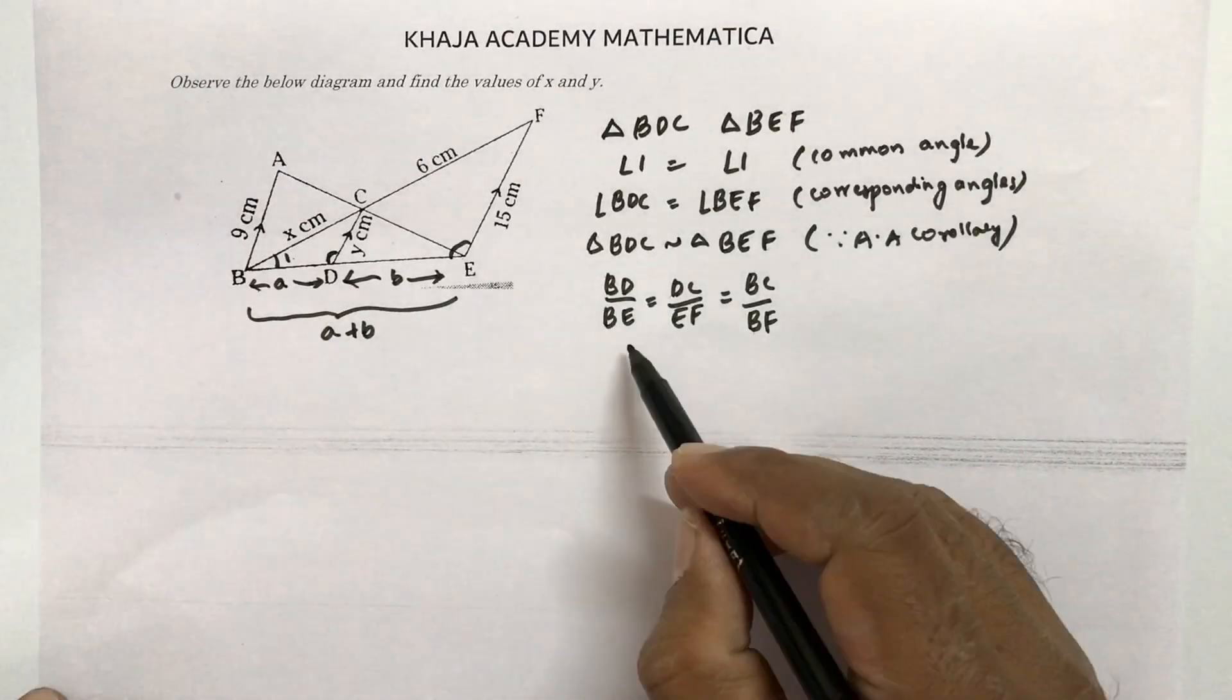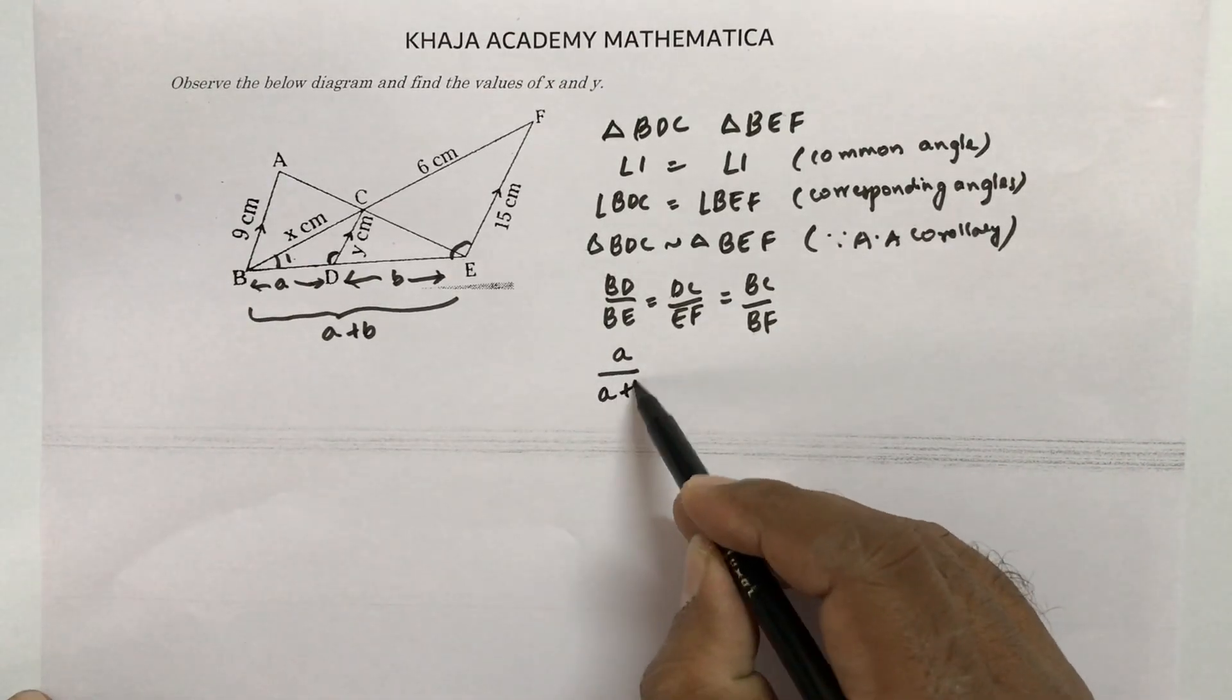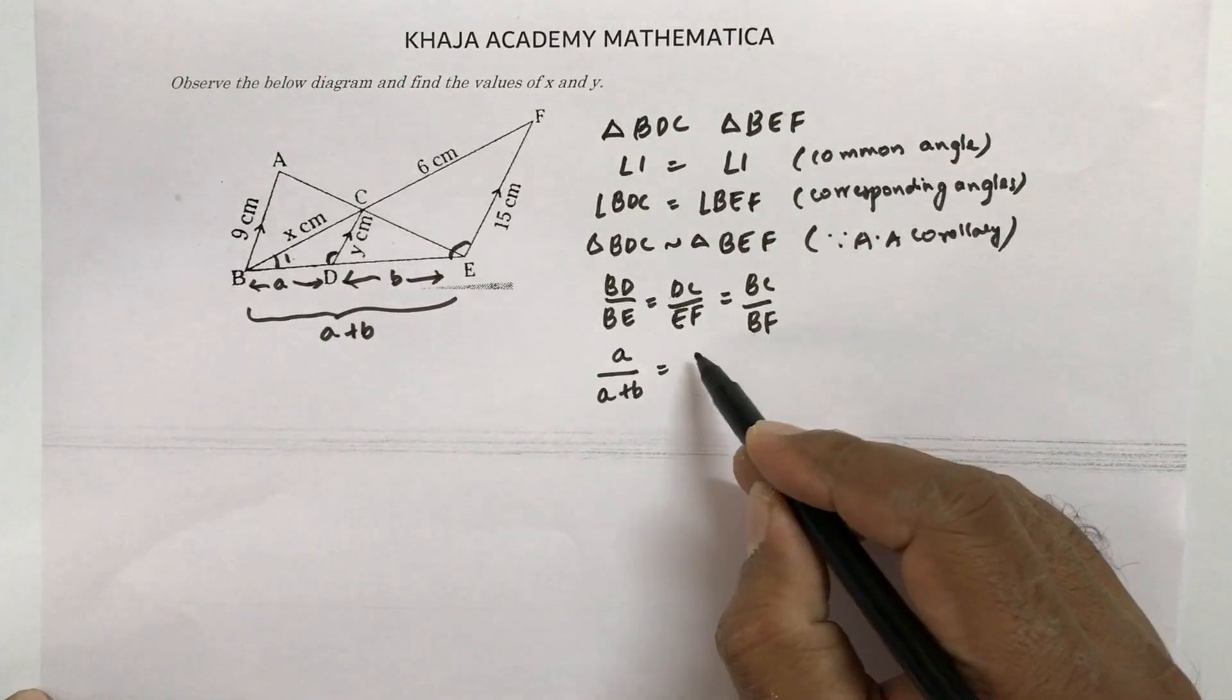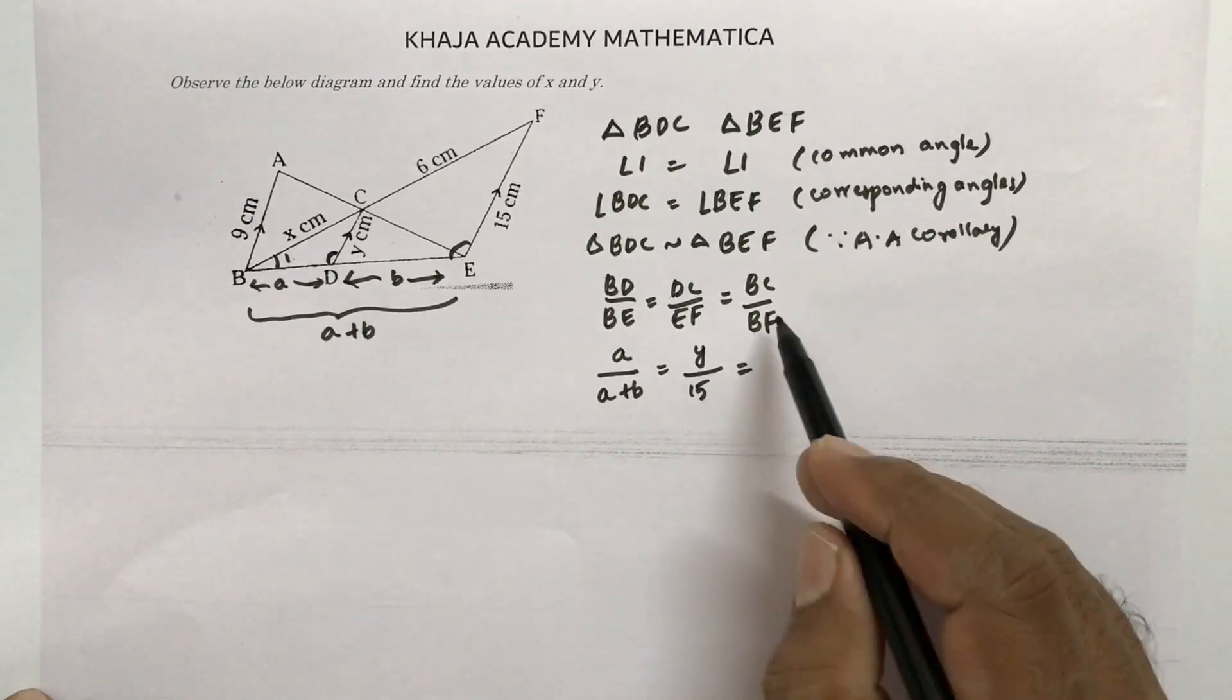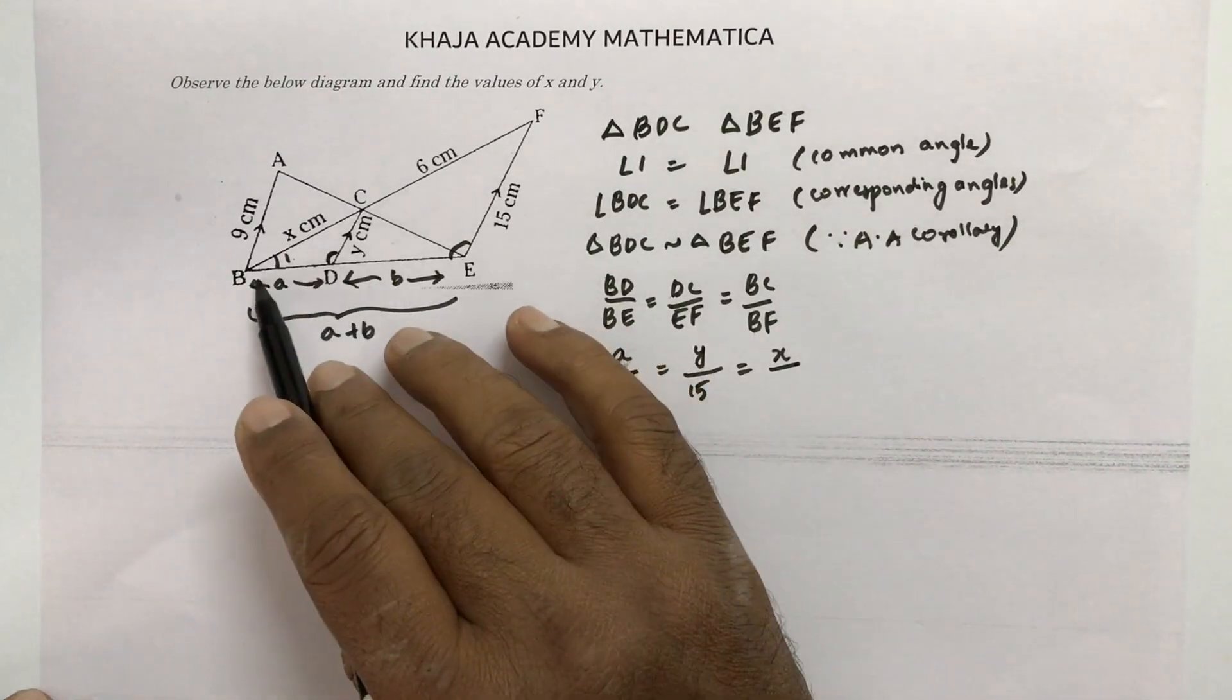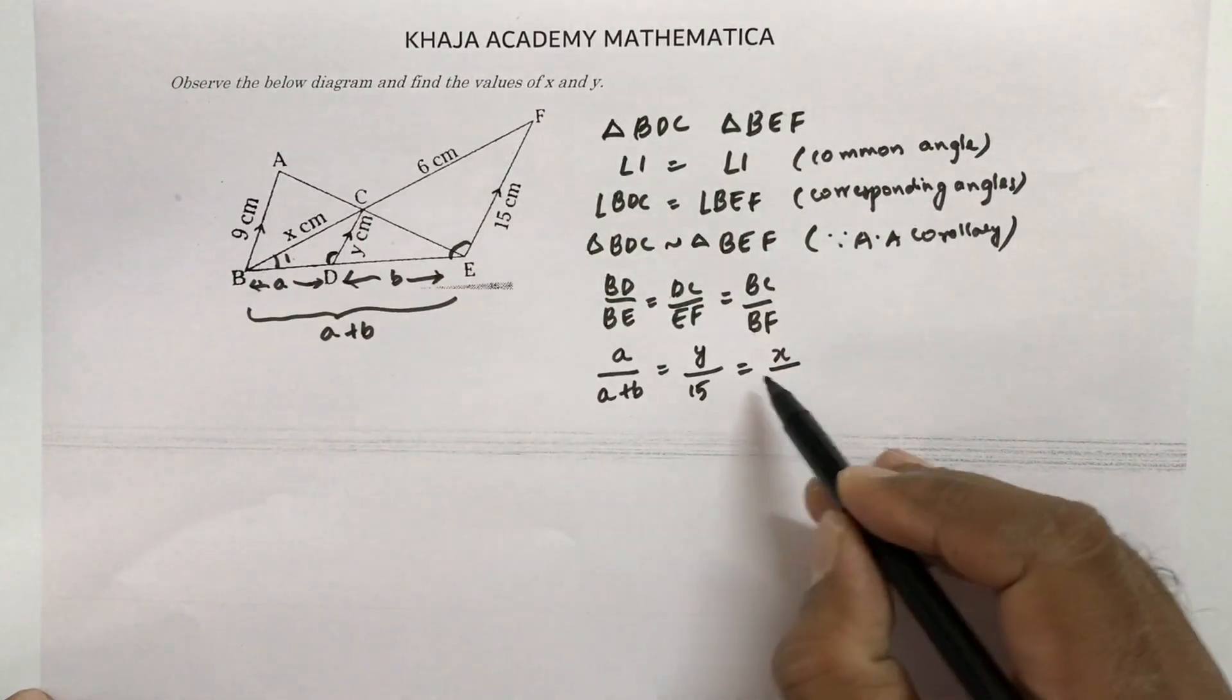Now here BD value is A, BE will be A plus B equals DC. DC is Y centimeters. EF is 15 centimeters equals BC. They give X and BF will be BC plus CF that is X plus 6.